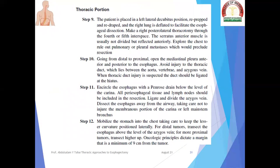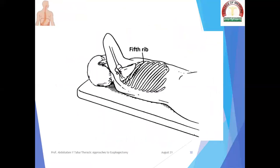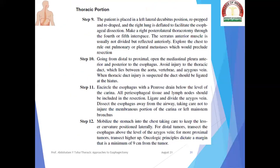The thoracic portion — step nine: the patient is placed in a left lateral decubitus position, re-prepped and re-draped, and the right lung is deflated to facilitate esophageal dissection. Make a right posterolateral thoracotomy through the fifth intercostal space. The serratus anterior muscle is usually not divided but reflected anteriorly. Explore the chest to rule out pulmonary or pleural metastases, which would preclude resection. Step ten: going from distal to proximal, open the mediastinal pleura anterior and posterior to the esophagus.